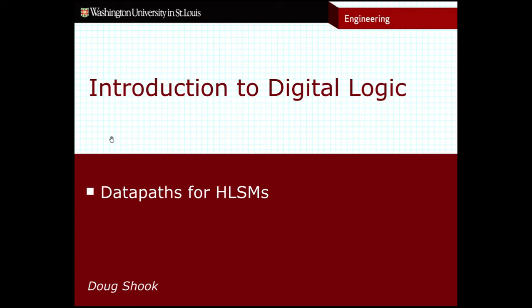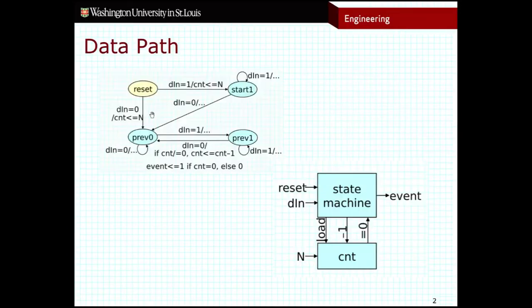So recall from one of my previous videos and from some of our previous class exercises that we saw this pulse counter high-level state machine. This is a Mealy state machine. And then we also discussed the circuit for this machine might look something like this, where the state machine itself acts as a controller of a register called count, which is our variable within this high-level state machine.